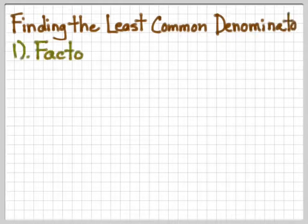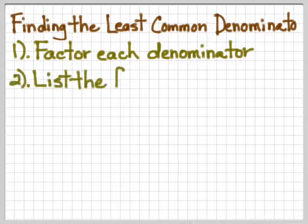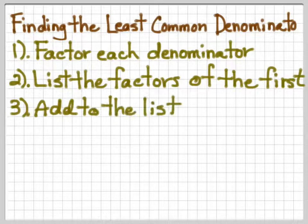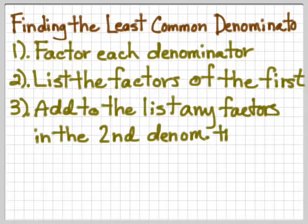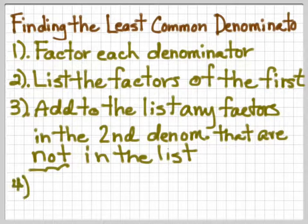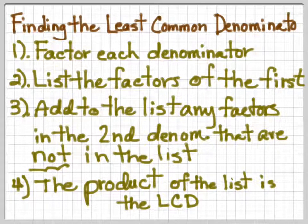Finding the least common denominator — LCD. We're going to factor each denominator, then list the factors of the first denominator, and then add to the list any factors in the second denominator that are not in the first. The LCD will be the product of that list.